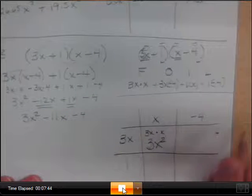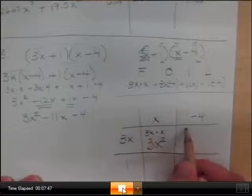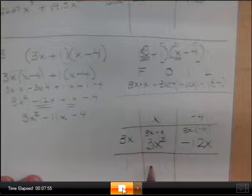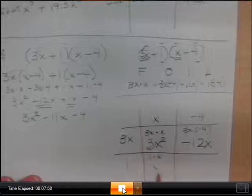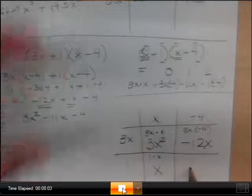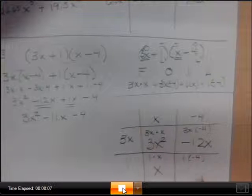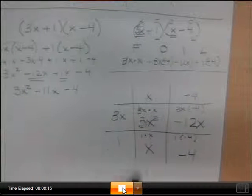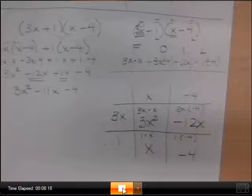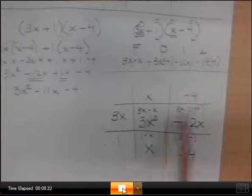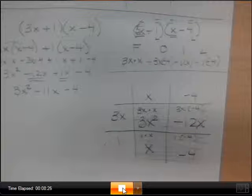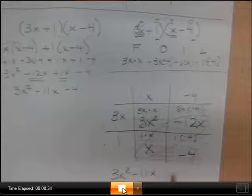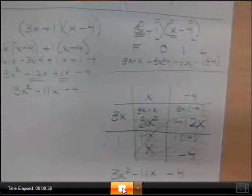So we would have our 3x². Then what would be this one? 3x times negative 4, which gives you what? Negative 12x. And what's going to go here? So 1 times x, which gives us 1x. And then here? 1 times negative 4, which gives us negative 4. Write those out and write those bigger. I want everybody to have this example because if you are struggling, this is where I'm going to take you. Because I think it cleans up a lot. Now, who can we put together in these four boxes? Well, you've got your 3x².